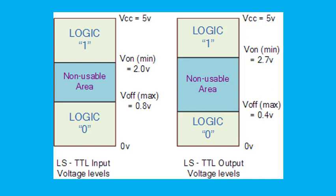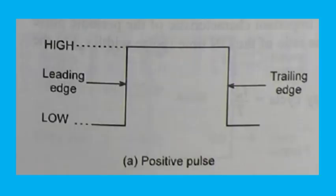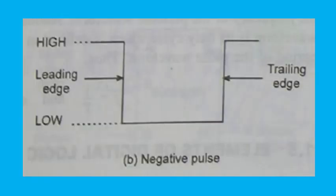A pulse may be a positive pulse or a negative pulse. A single positive pulse is generated when a normally low voltage goes to its high level and then returns to its normal low level. A single negative pulse is generated when a normally high voltage goes to its low level and then returns to its normal high level.